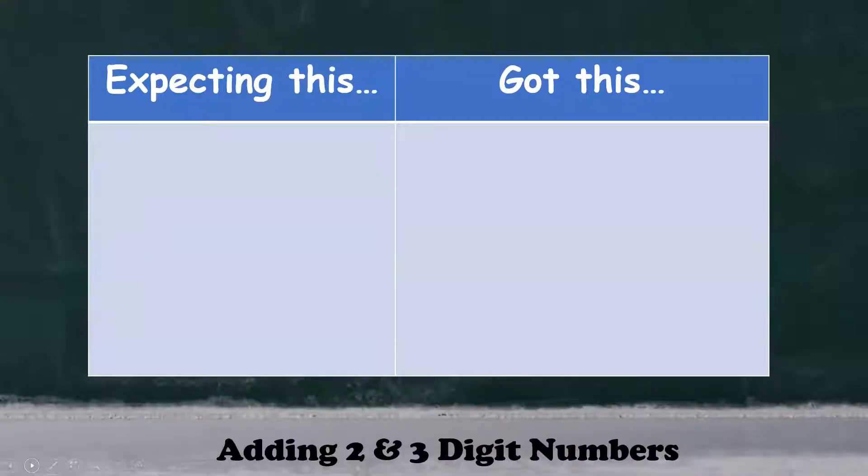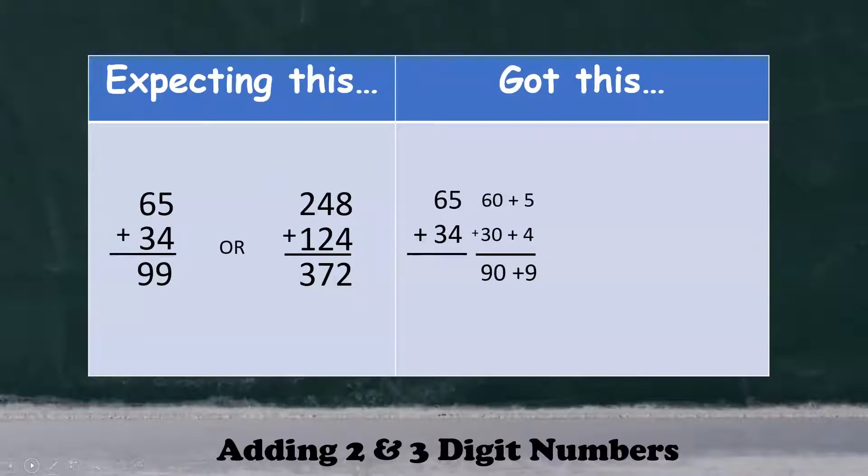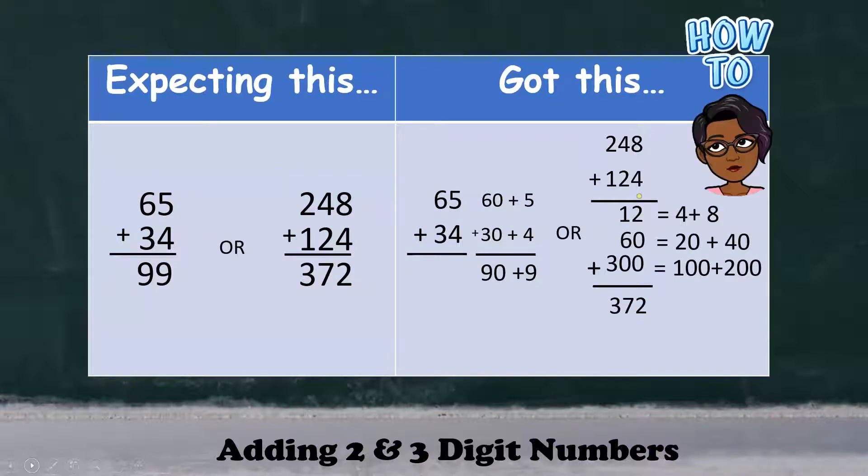Have you ever found that Common Core math is not so common? Or as a parent, maybe your child comes home with homework that you just don't get. For example, you were expecting to see something like this, or perhaps even this. But then you're presented with this, or to top it off, even this. You may be wondering, what is this?